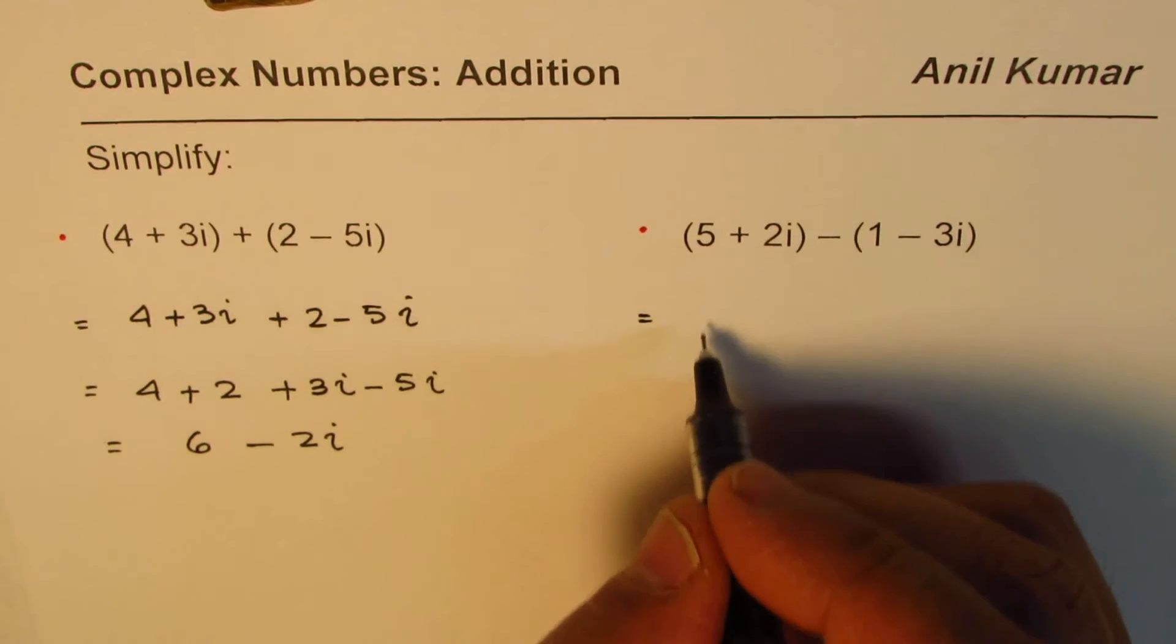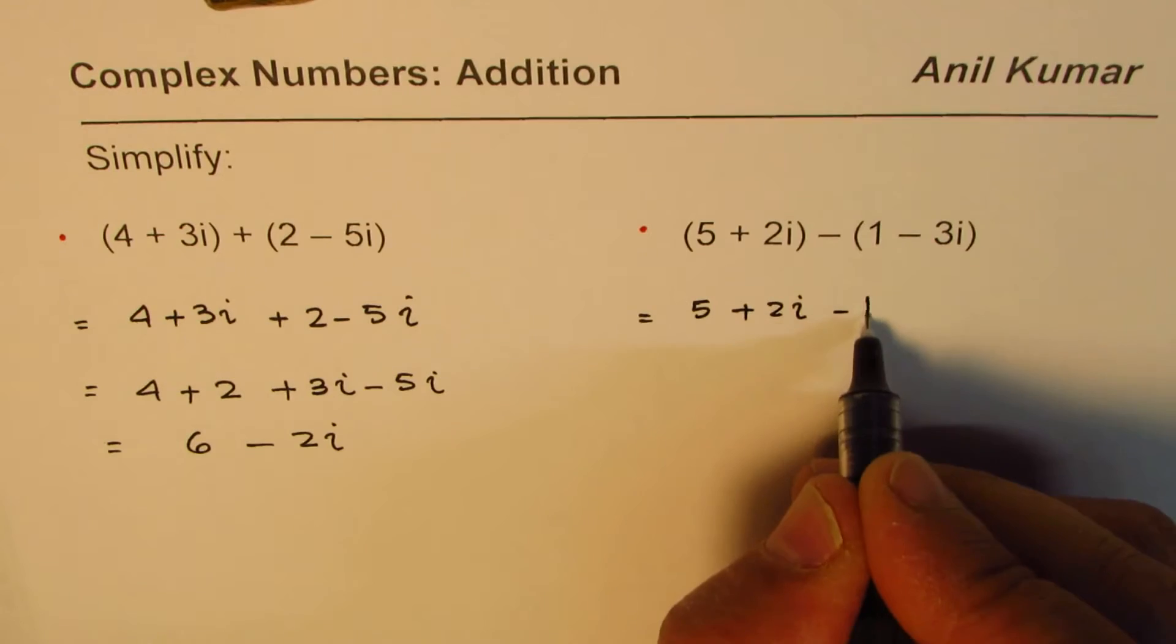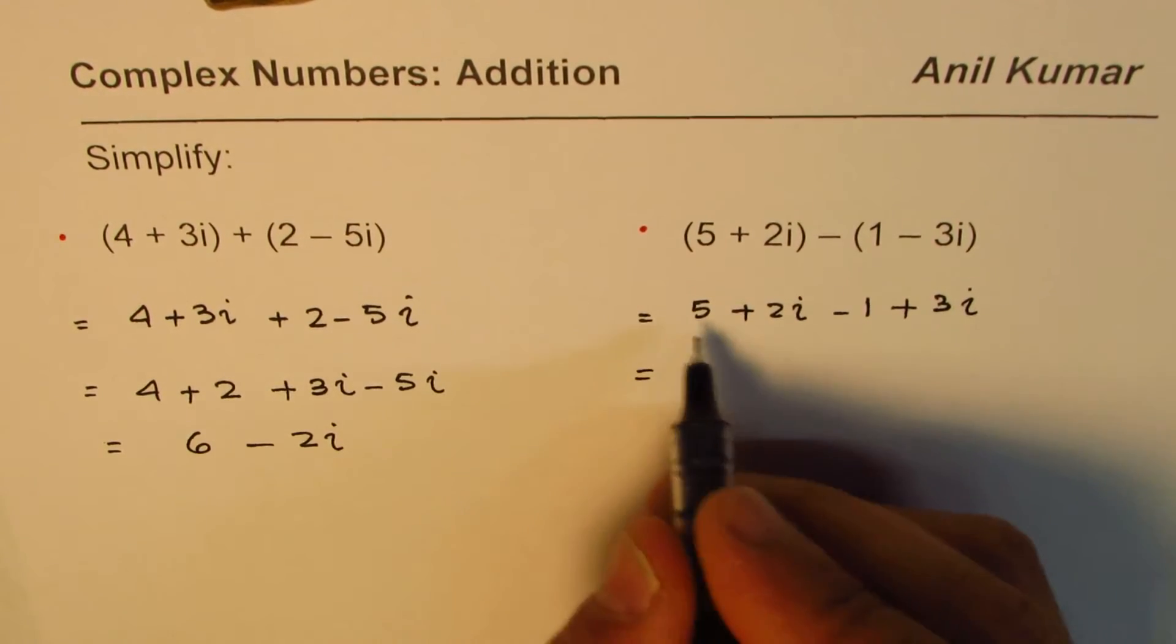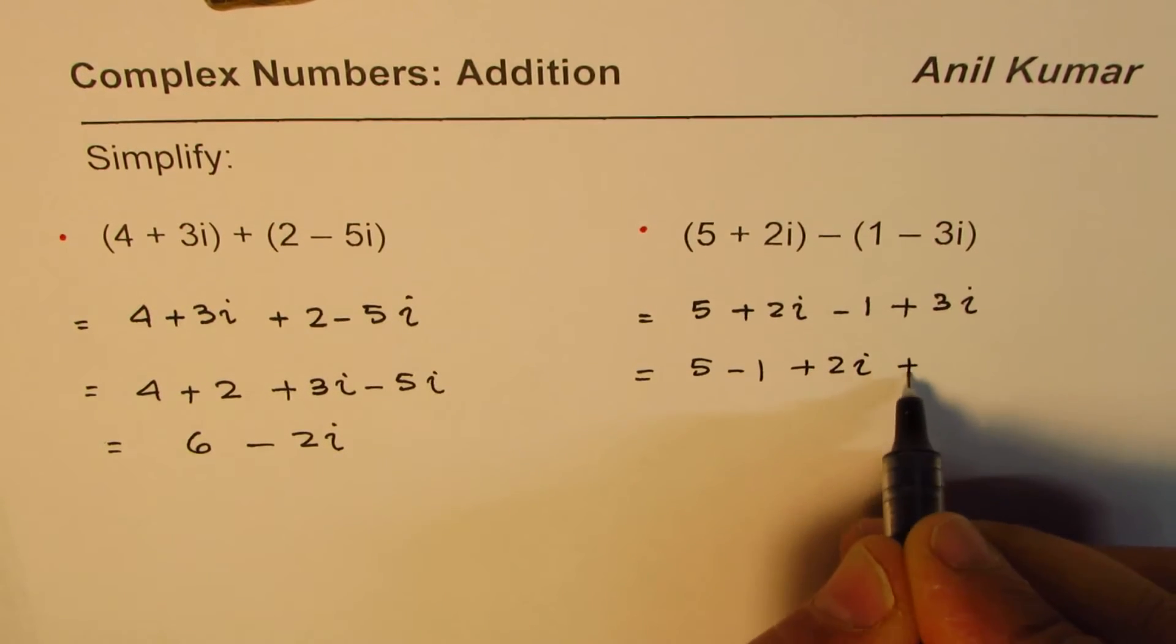Let's open the bracket—that's the first step: 5 + 2i - 1 + 3i (sign will change inside). Combine the real terms, which is 5 - 1, and then we have 2i + 3i.